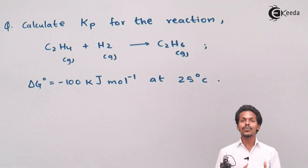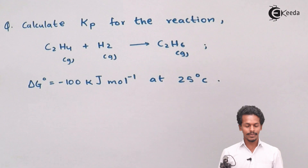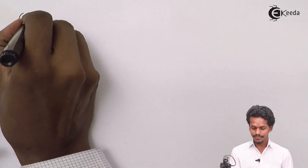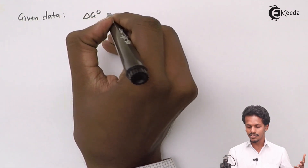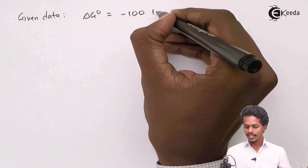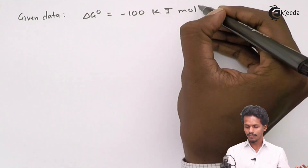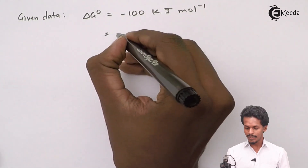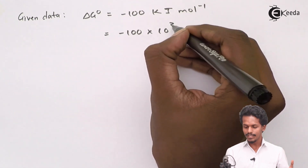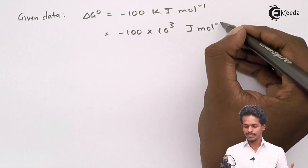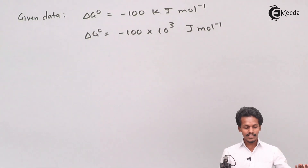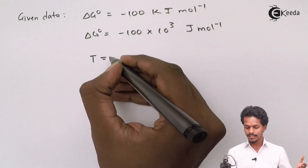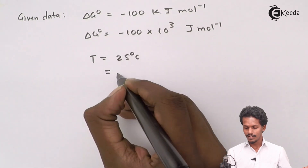Let us extract the data. The given data: ΔG°, the standard Gibbs free energy change, is minus 100 kilojoules per mole. It is better to convert this into joules, so it becomes minus 100 × 10³ joules per mole. The temperature is also provided as 25°C, which is 298 Kelvin.